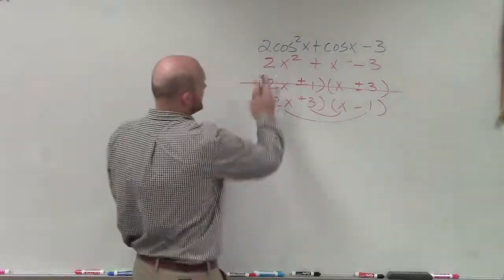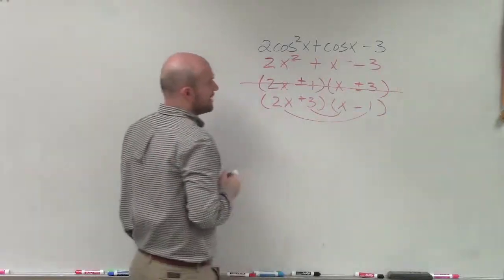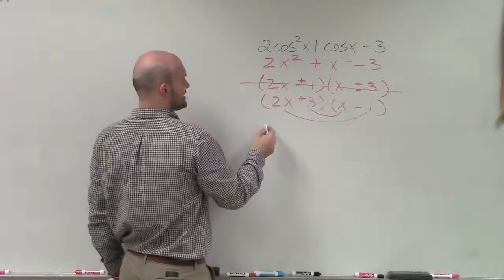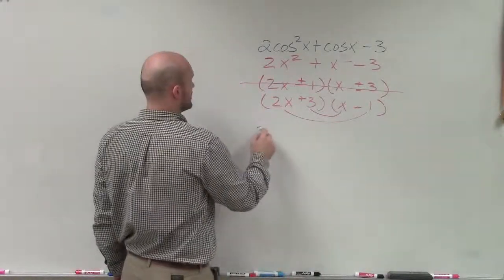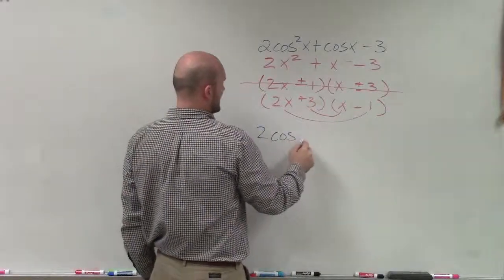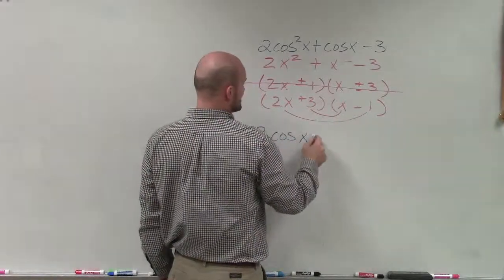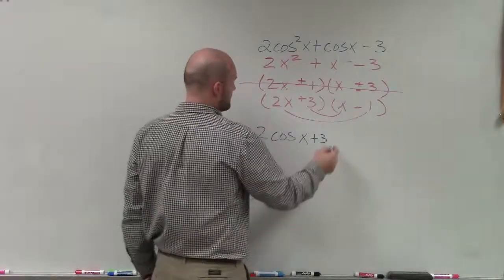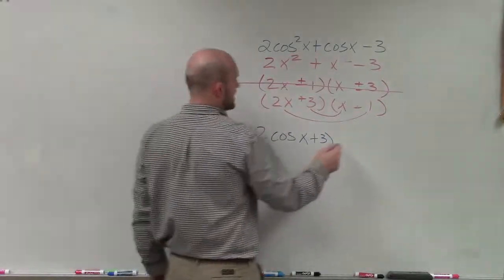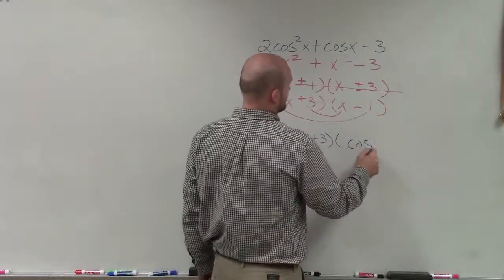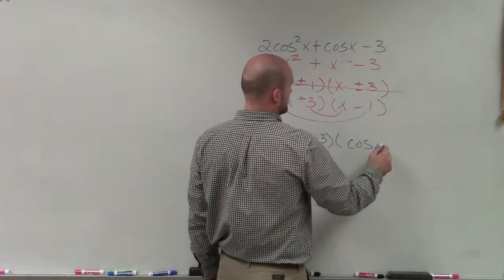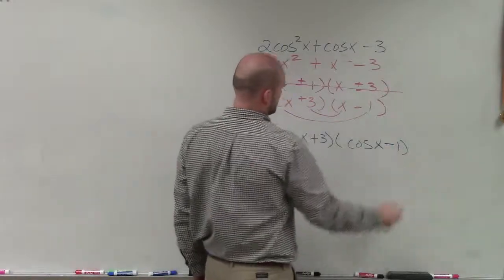So what I'm going to want to do is just rewrite that with what I have here. So when I do that, I have 2 times cosine of x plus 3 times cosine of x minus 1.